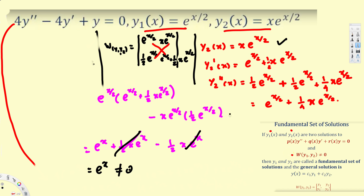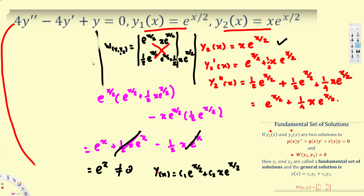Since the Wronskian is not zero, we can write the general solution for this differential equation as y(x) = c1*e^(x/2) + c2*x*e^(x/2). That is the general solution for this differential equation.